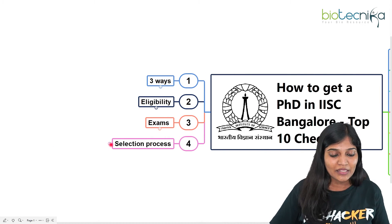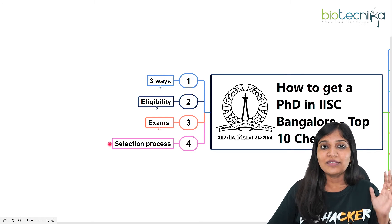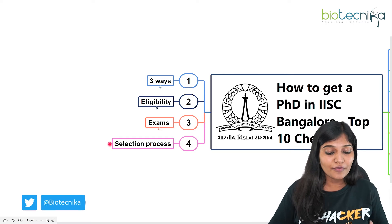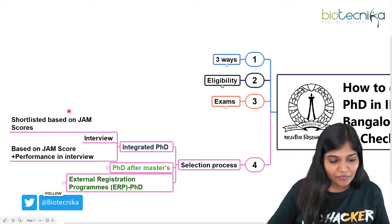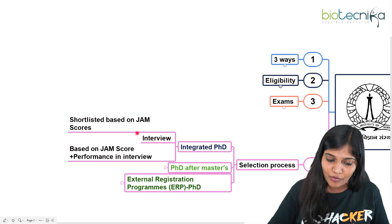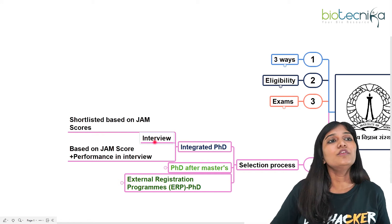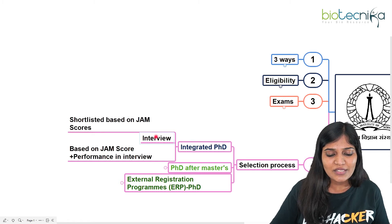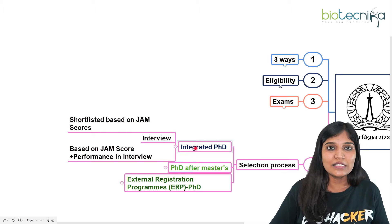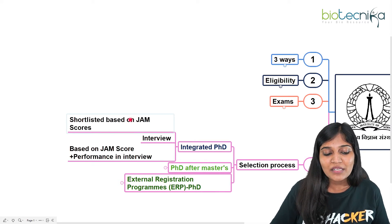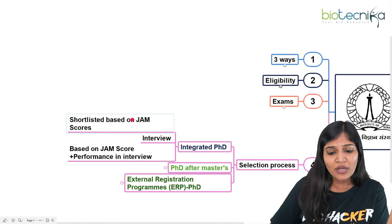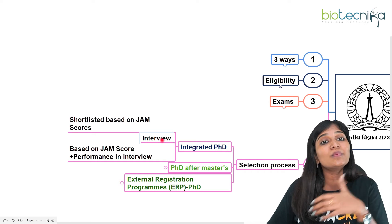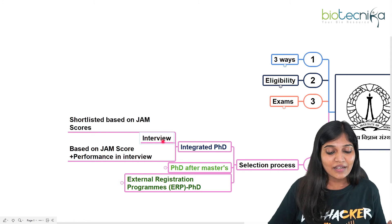The third checklist item is the selection process. For Integrated PhD, students write the IIT JAM examination — if you have a good score or rank, you will be called for an interview. In the interview, 10 to 12 professors in a boardroom will ask you questions. Selection is not based only on your JAM score; if you topped the exam but performed poorly in the interview, you won't be selected. Both your JAM score and interview performance go hand in hand.